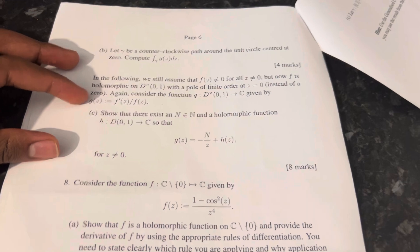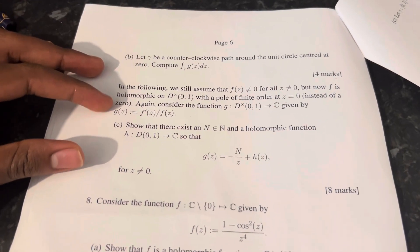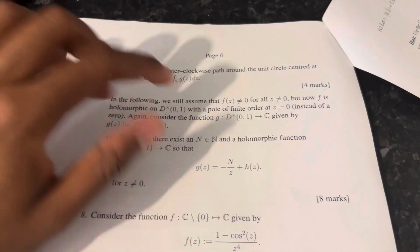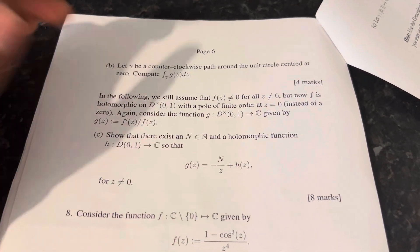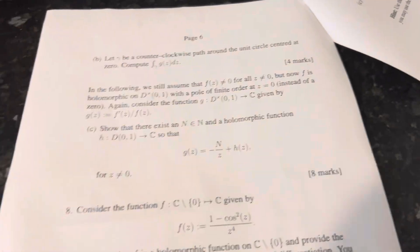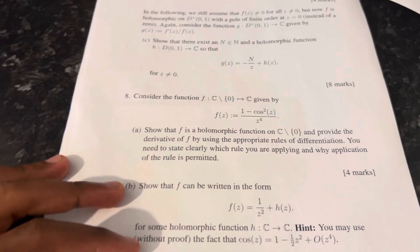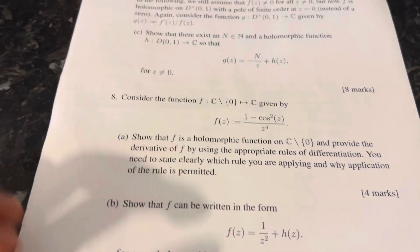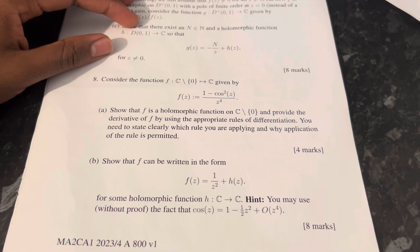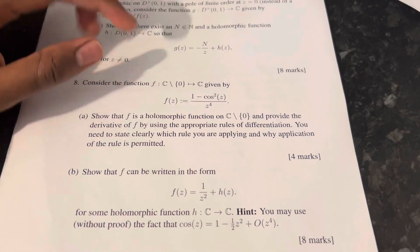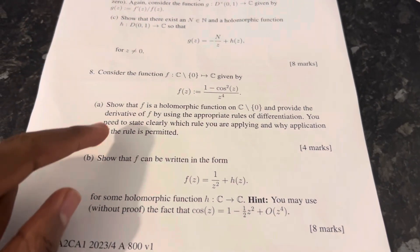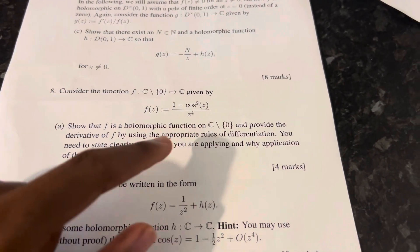In the following we still assume that f of z is not equal to zero for all z does not equal zero, but now if it's holomorphic on the punctured disc with a pole of finite order at z equals zero instead of a zero. I'm going to be honest, I don't think I ever fully established the difference between a pole and a zero. I did this exam on the 30th, so coming up to two weeks now.